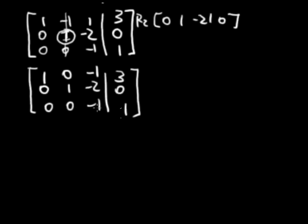Here in the same way, this is not a 1 yet. It's a negative 1. So I'm going to multiply row 3 by negative 1. And that will get me to 0, 0, 1, negative 1 for row 3. And row 1 and row 2 will stay the same for this step.